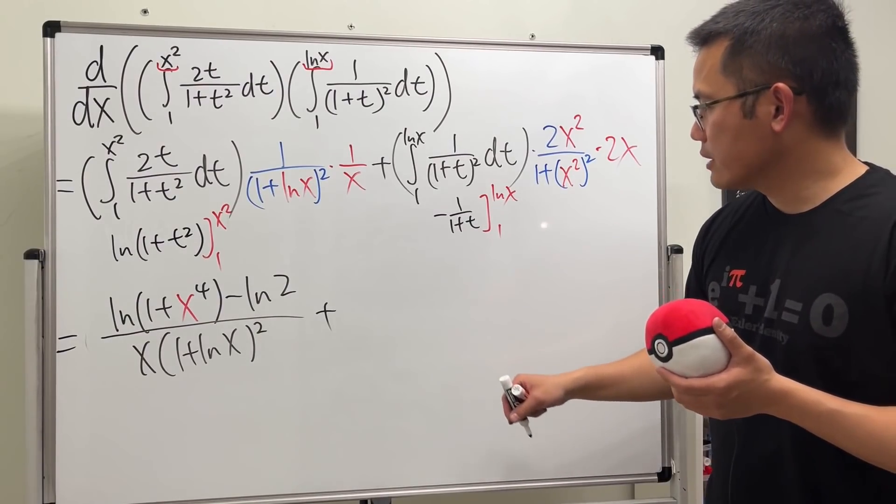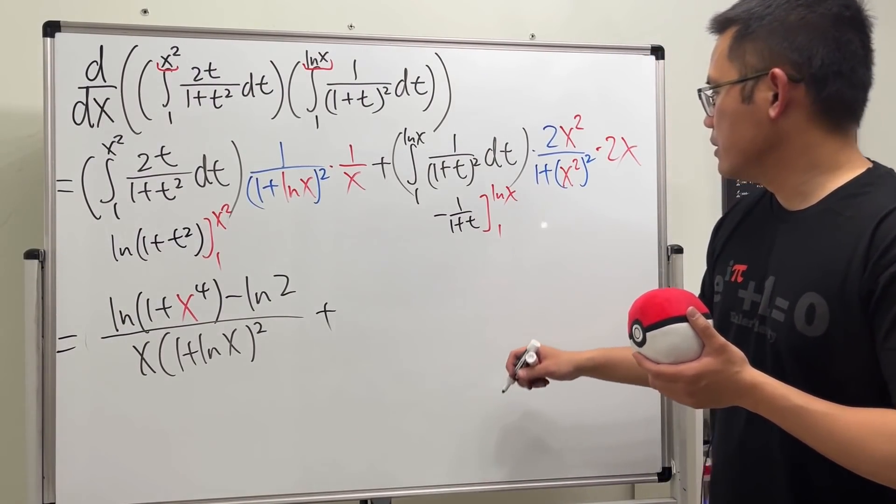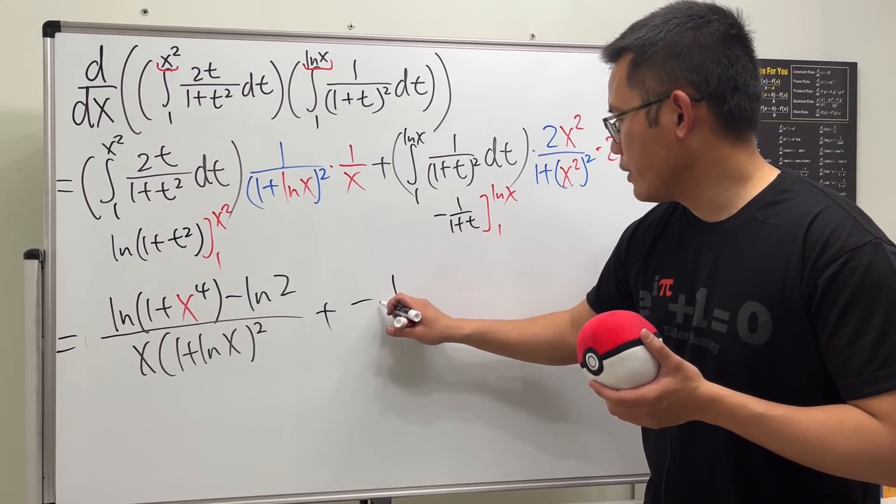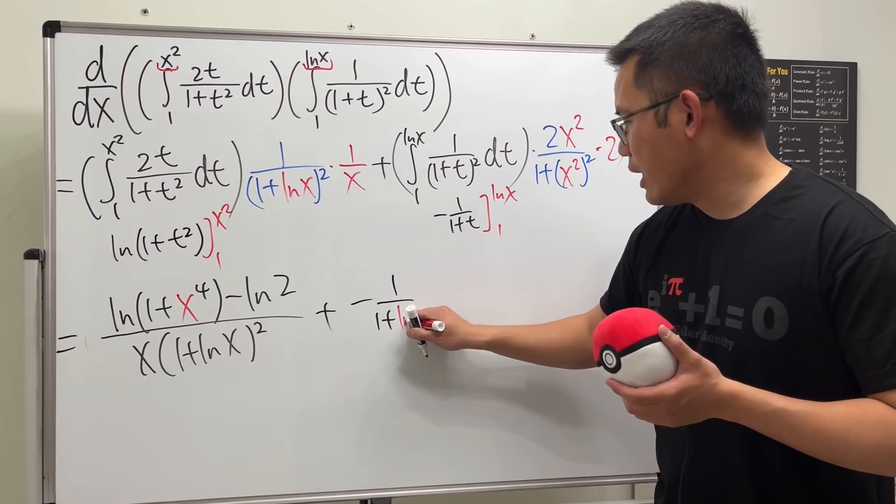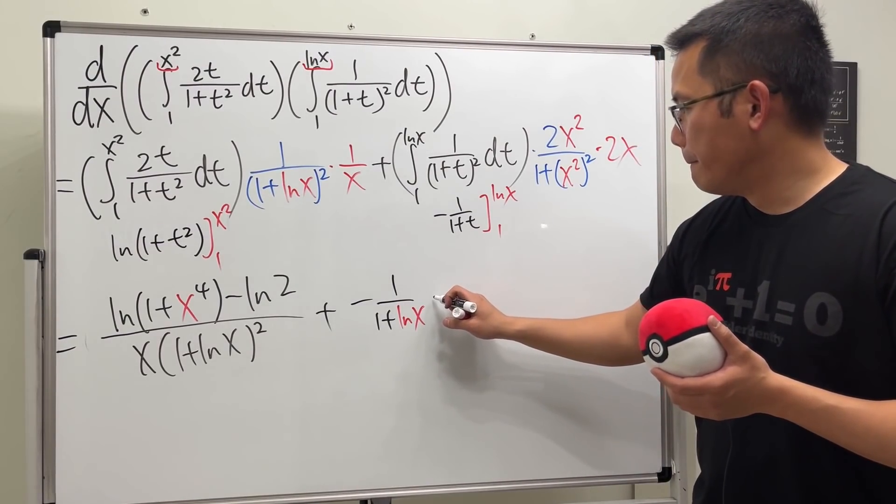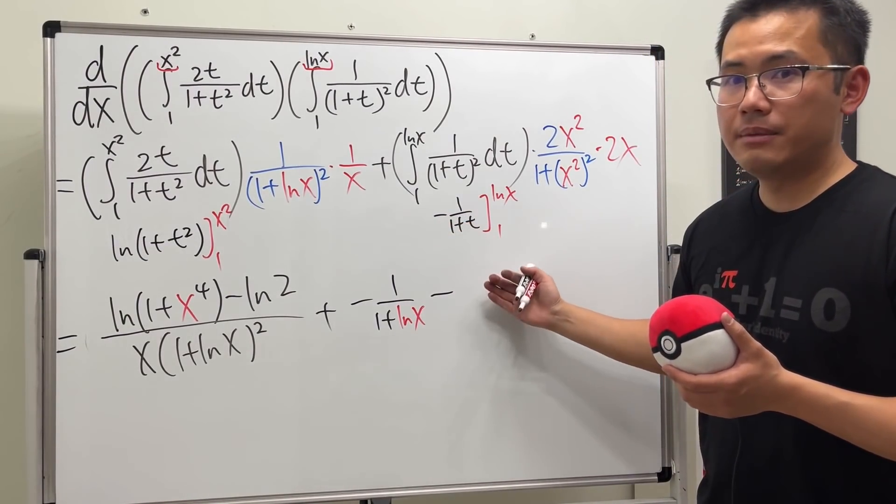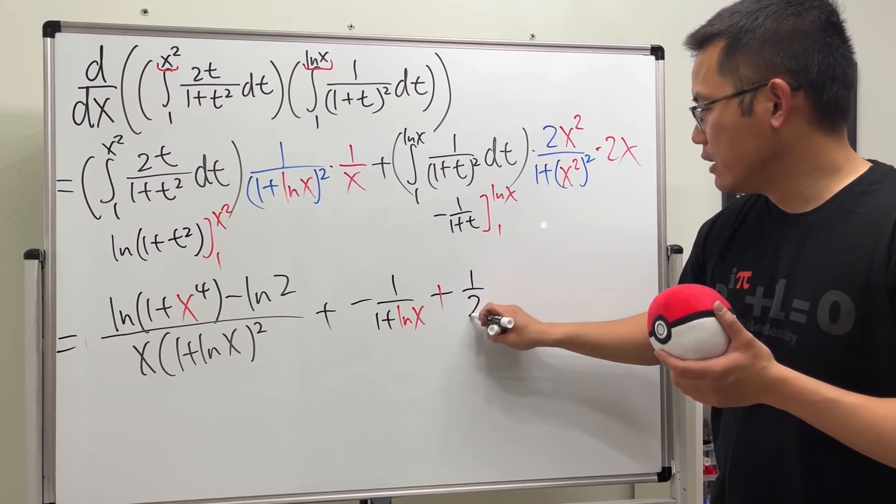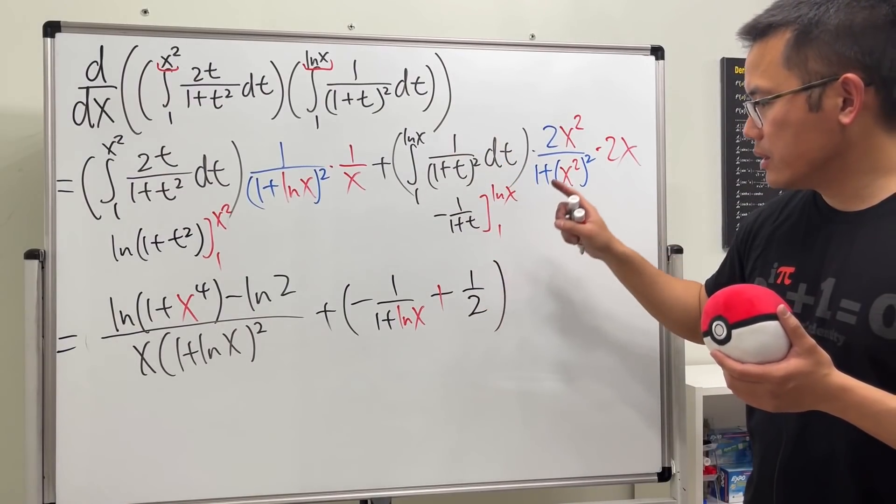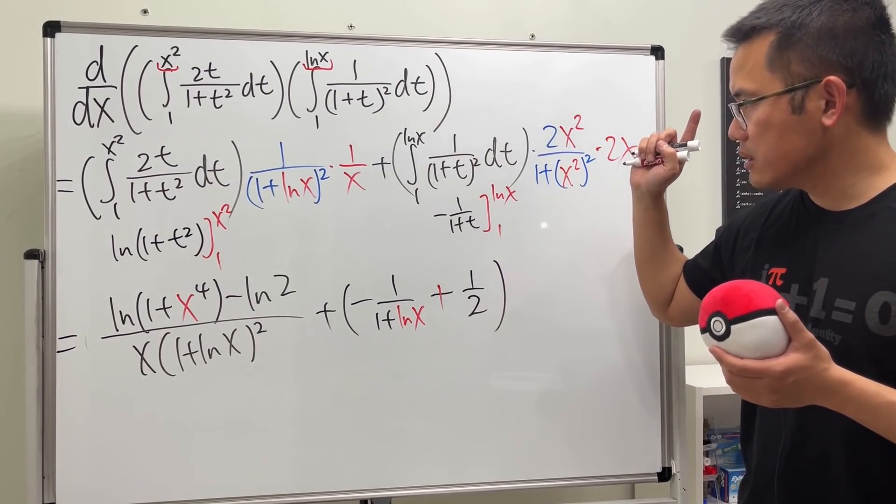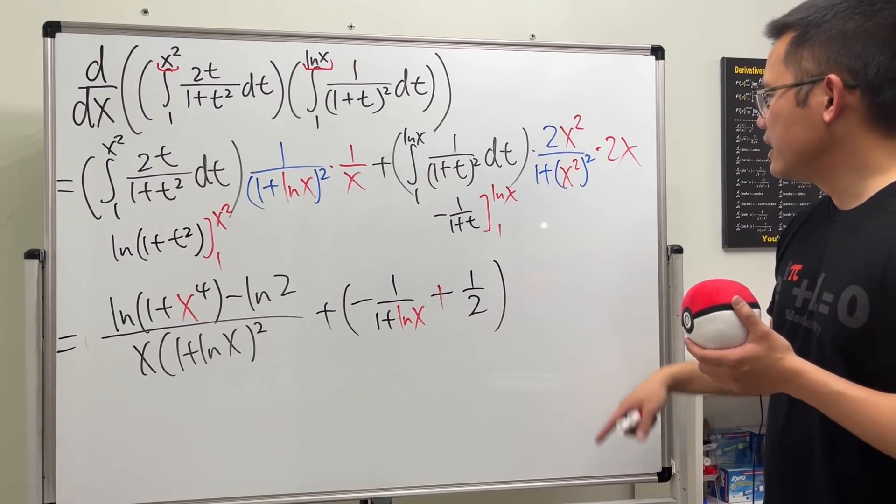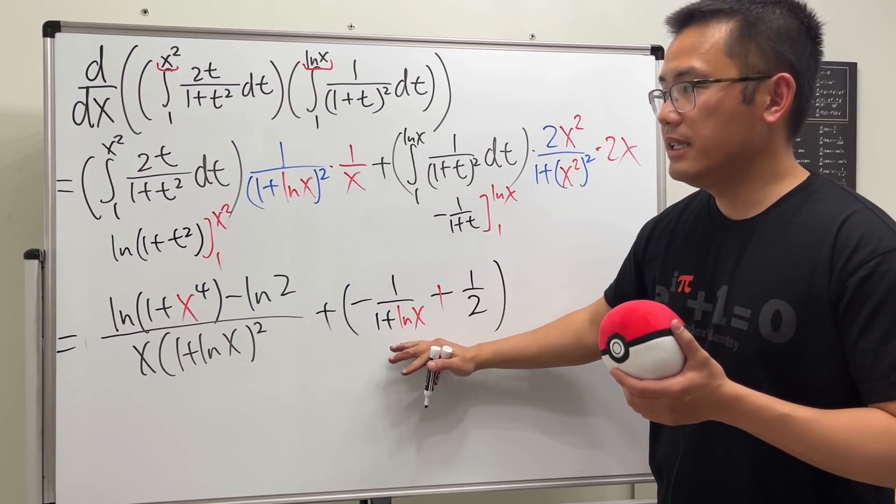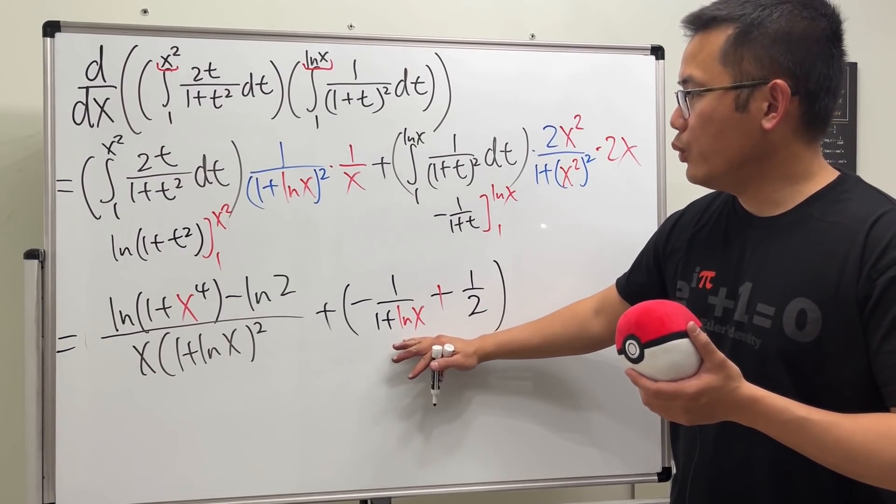Then just plug in, plug in 1 and ln(x). So we are going to get, let's see, plug in ln(x) first, so we get, okay, and then we have some denominators. So we have negative 1 over 1 plus ln(x), and then minus, and then minus, so become plus, and put a 1 in here, so we have one half. So work that out, you will get that. And then the rest. And again, if you look at this and do the derivative, you will end up with this and you will end up with this.